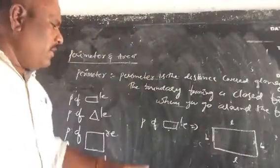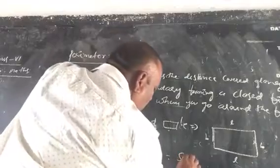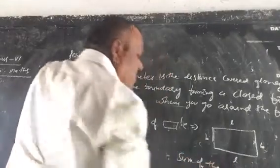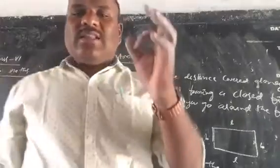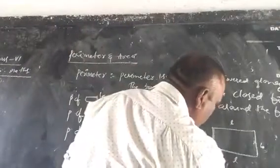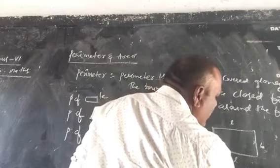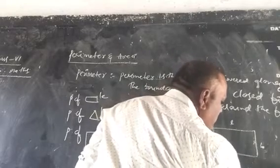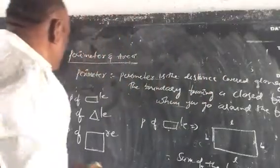Generally, the perimeter of a rectangle is equal to the sum of the lengths of its 4 sides.